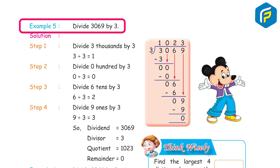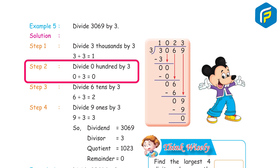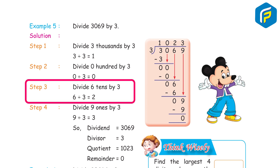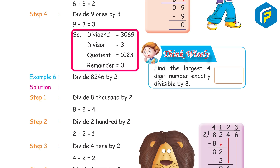Example 5: Divide 3069 by 3. Step 1: Divide 3 thousands by 3 — 3 ÷ 3 = 1. Step 2: Divide 0 hundreds by 3 — 0 ÷ 3 = 0. Step 3: Divide 6 tens by 3 — 6 ÷ 3 = 2. Step 4: Divide 9 ones by 3 — 9 ÷ 3 = 3. So, dividend 3069 ÷ divisor 3 = quotient 1023, remainder 0.